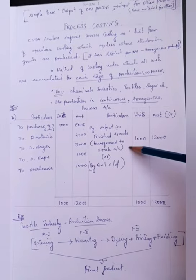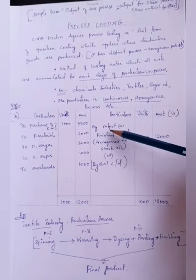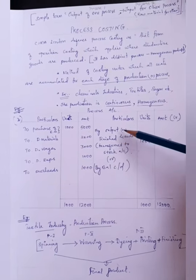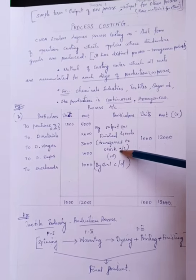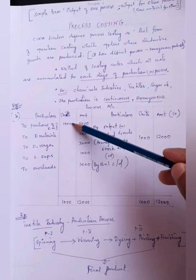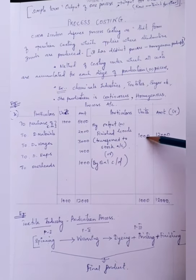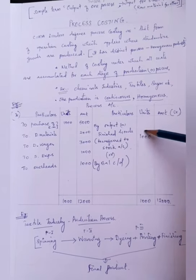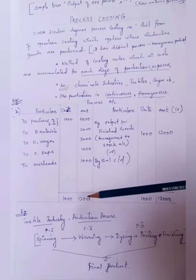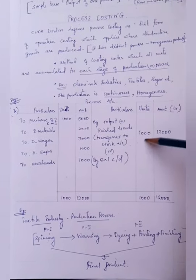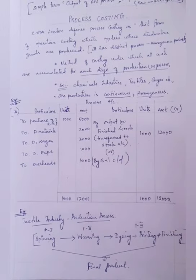Assuming it is only one process, at the end it is completed as finished goods — the output — which is transferred to the stock account. The total number of input units is 1,000, and balancing the account, the output is also 1,000 units. The total cost of the process is Rs. 12,000, so the total cost of production is Rs. 12,000. You balance both sides.